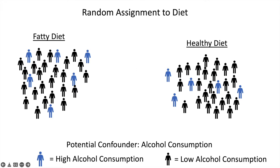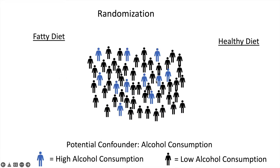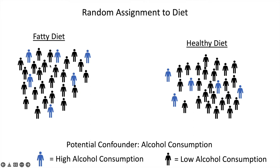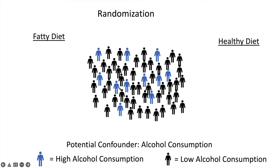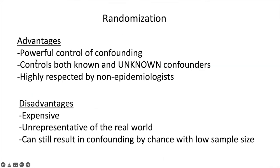Randomization is likely to distribute this confounding variable evenly because everyone had the same probability of going left and right, and there's no systematic reasoning to who went left and right the way people typically behave in the real world. This is the crux of why observational research is difficult — you're having to conceptualize every way the fatty diet group and healthy diet group might differ and find ways to measure and control that. But randomization is nice because you don't even need to know all of the confounders. By randomly assigning everyone, you're likely going to automatically control both known and unknown confounders. So people really respect randomization — it's powerful to control for confounding.